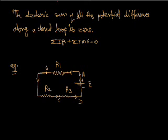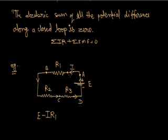We start from point E and follow the current through R1. Some voltage is dropped here, so we write minus IR1. Point A is at higher potential and B is at lower potential. When we travel from higher potential to lower potential through any resistance, we write minus IR. Continuing around the loop: minus IR1, minus IR2, minus IR3 equals zero. This gives us the potential difference equation for the loop. This is the direction of current flowing.